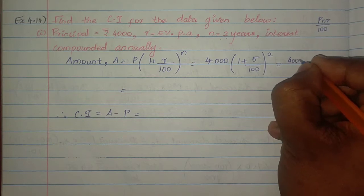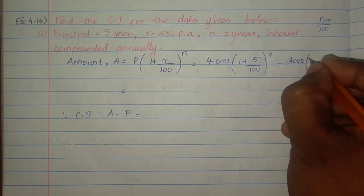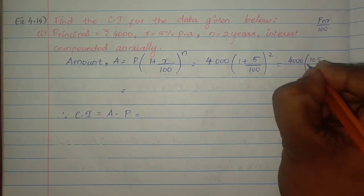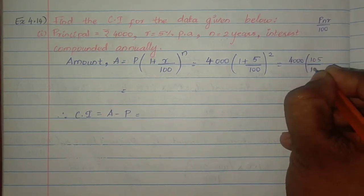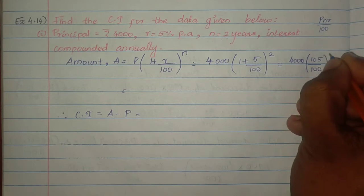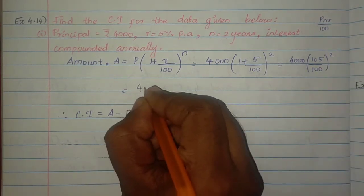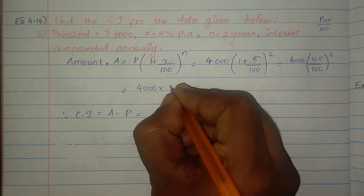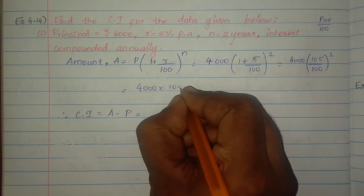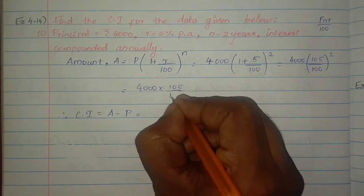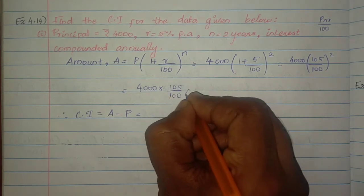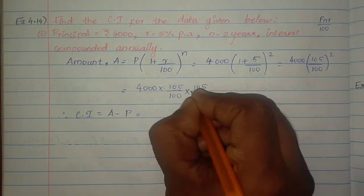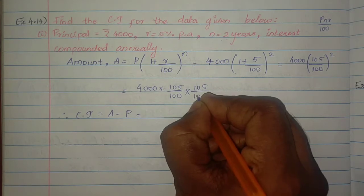Principal amount P is 4000. Rate of interest is 5%, and the number of years N is 2. So we calculate: 4000 × (105/100)², which expands to 4000 × (105/100) × (105/100).